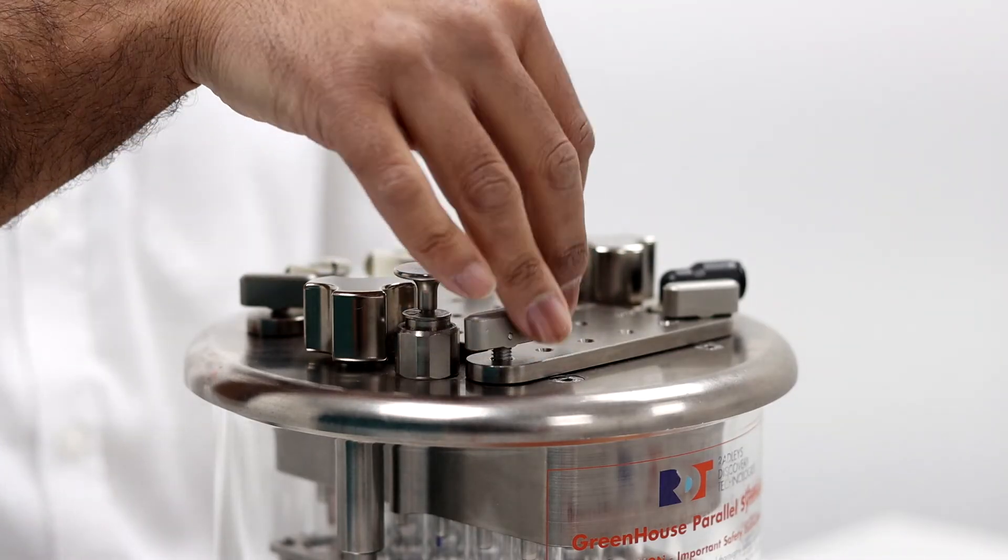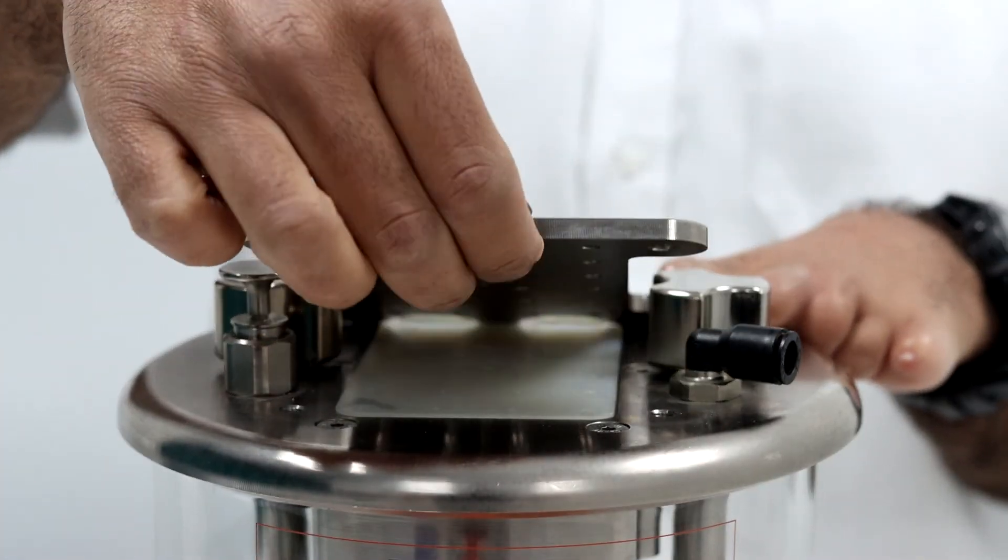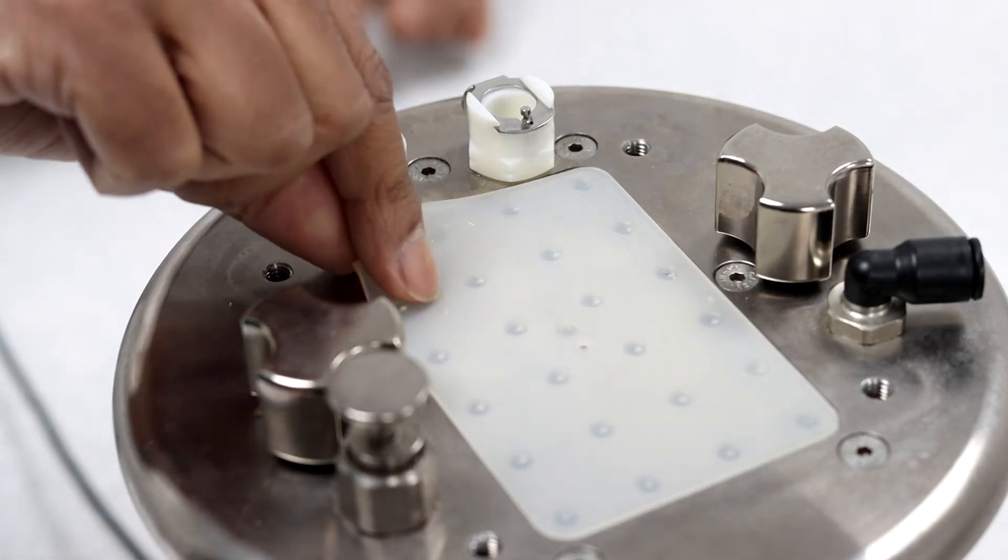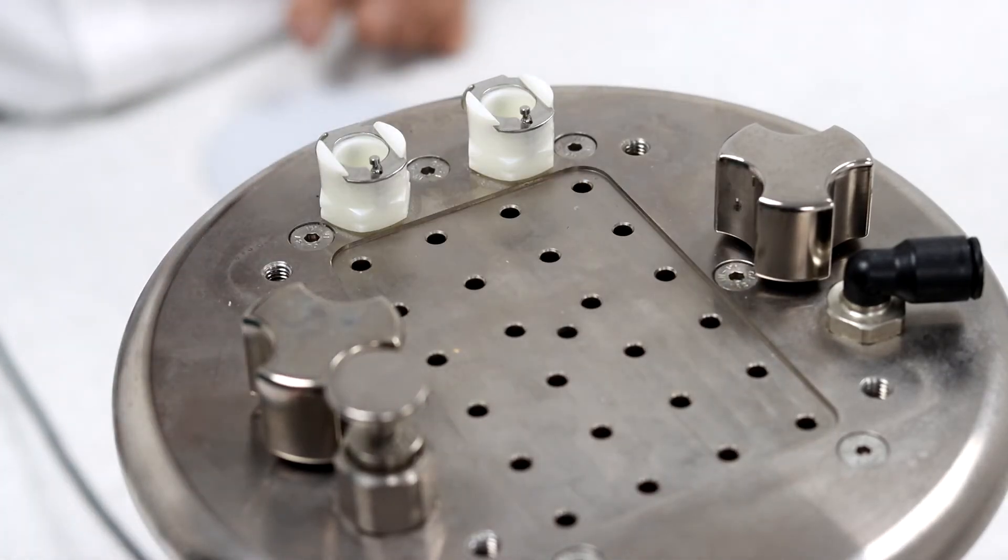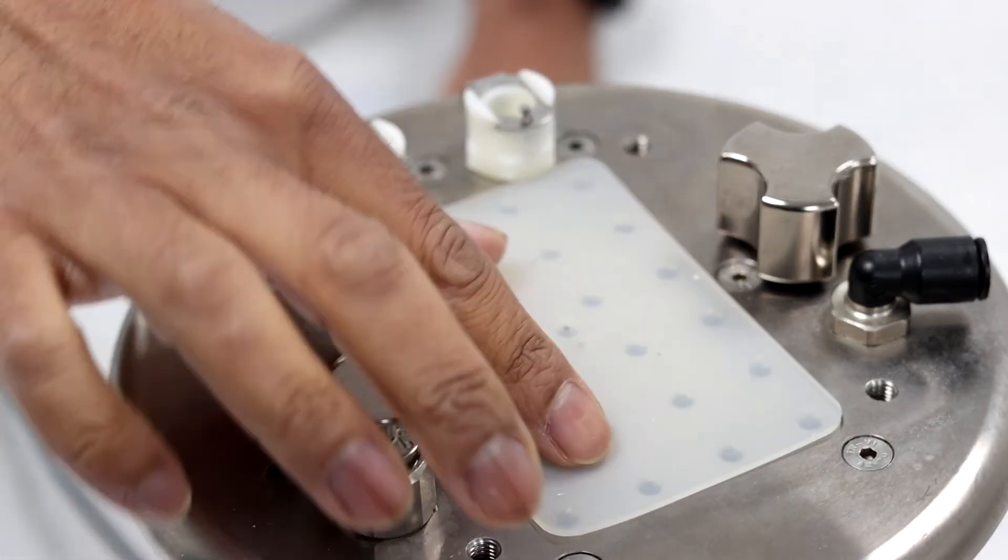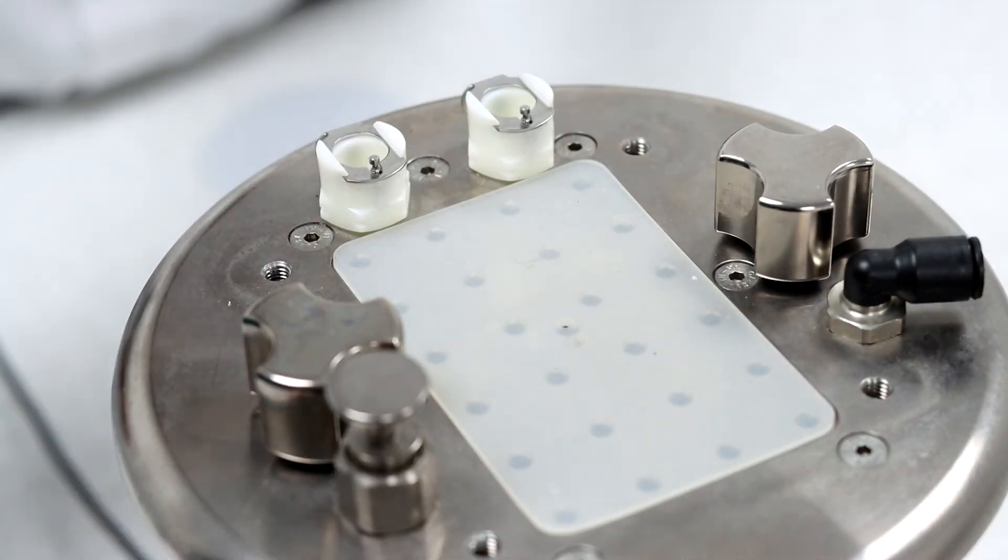The greenhouse reflux head also allows you to make additions or take samples from your reaction tubes. Under this sealing plate there is a septum or a sealing mat. We have three septum mats made of different materials and one sealing mat available. By using these mats you're also able to add and sample air sensitive reagents.